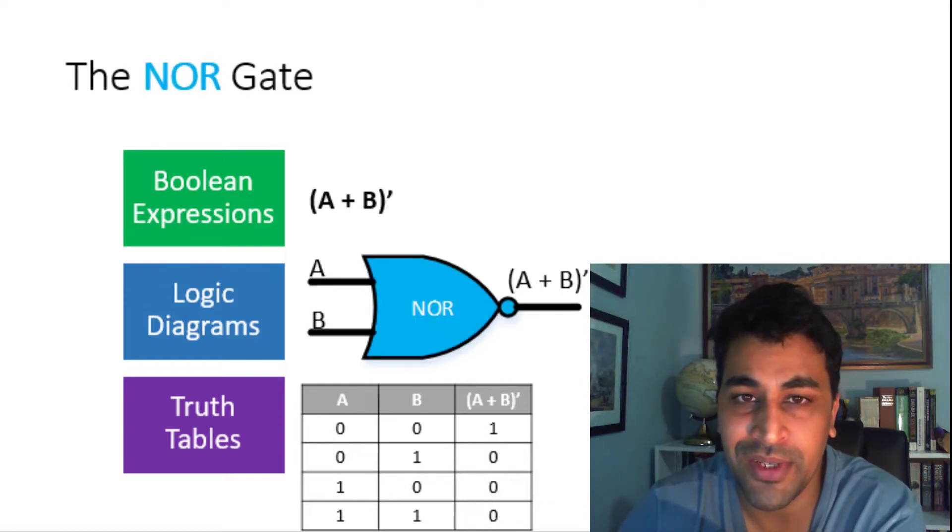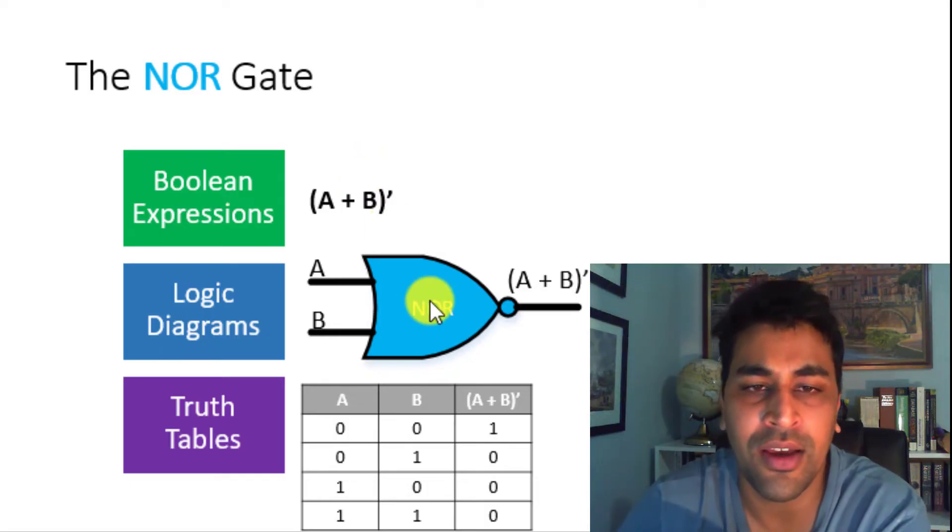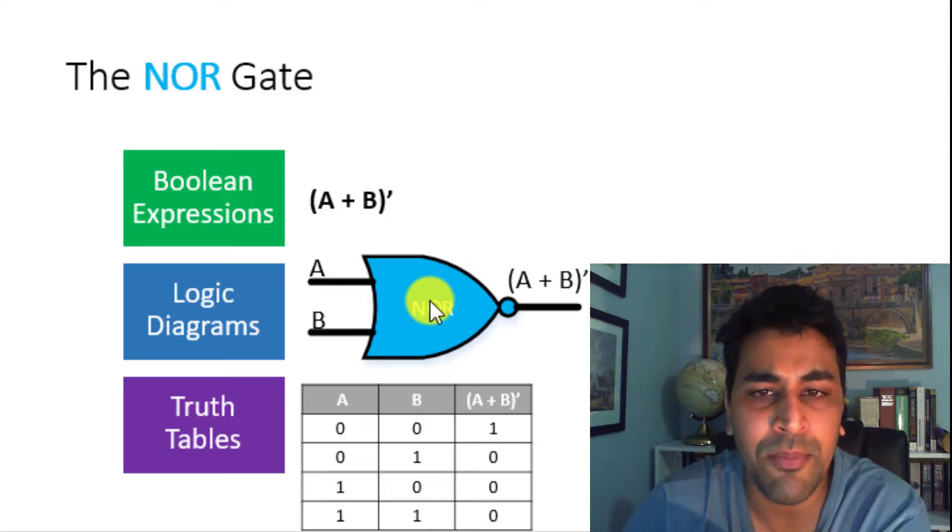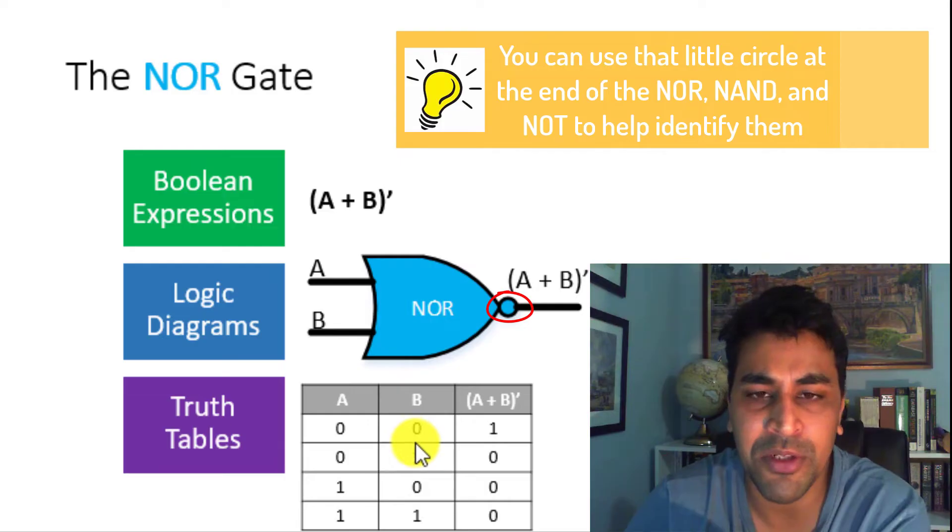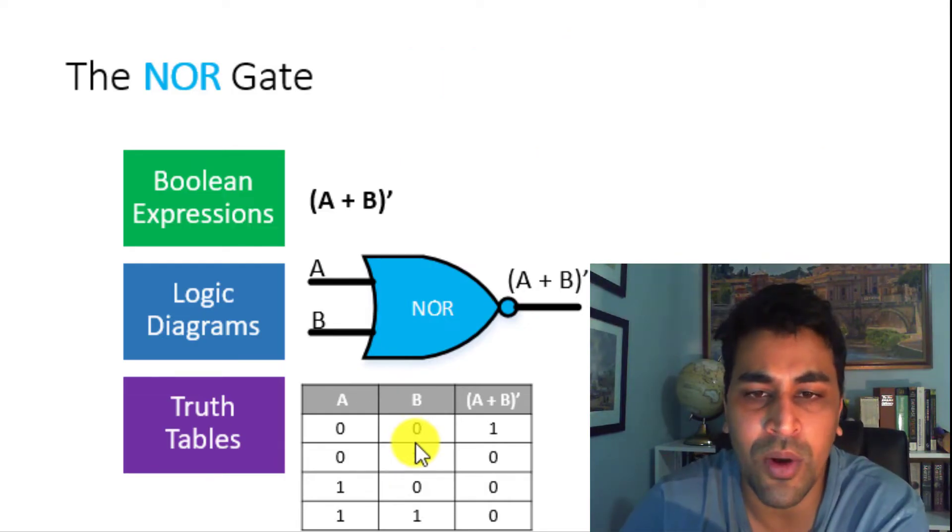Similar to the relationship between the AND and the NAND, if you put an OR gate through a NOT, you will get a NOR gate. This is the Boolean expression for the NOR gate. Notice that the NOR gate is an OR knotted. The logic diagram for the NOR gate looks very similar to the OR, except with this little circle at the end. The truth table shows that for the NOR gate to produce a 1, both input signals need to be 0.